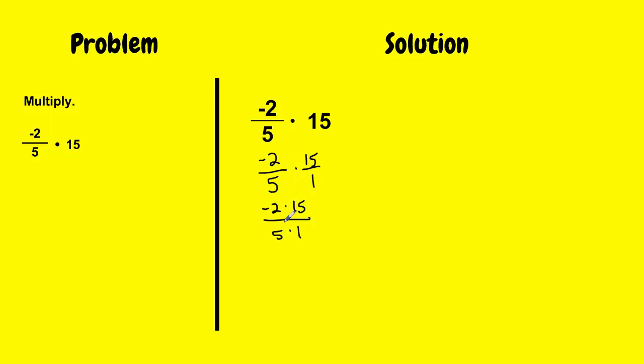And I check, can I simplify anything here? 2 over 5, I cannot simplify. 2 over 1, it's already simplified. 15 over 5, I can simplify that. 5 goes into that once, into 15, 3 times.